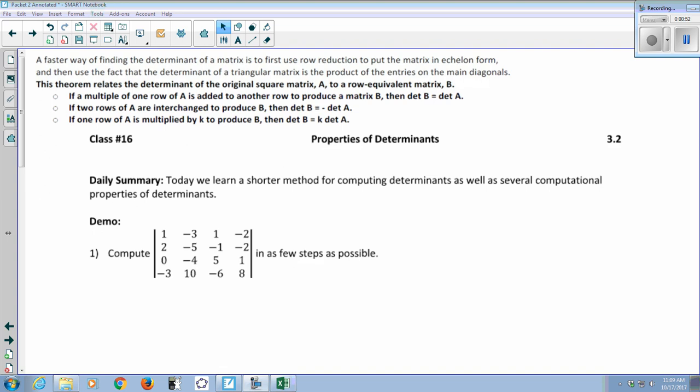And if one row of A is just scaled by a scalar K, then the determinant of your new matrix is K times the determinant of the original.